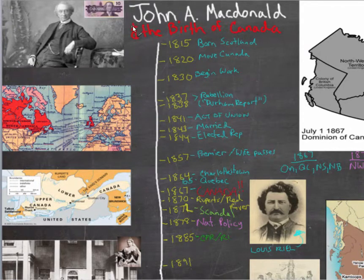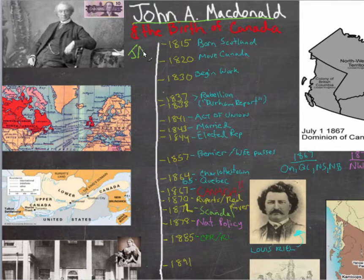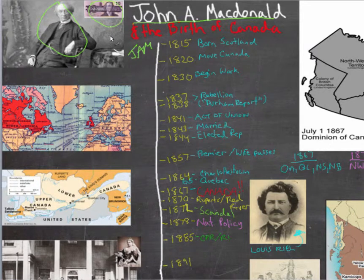Today we're going to be talking about John Alexander MacDonald, a.k.a. John A. MacDonald, a.k.a. Jan, Canada's first Prime Minister. Here he is on the left, and here he is on the Canadian $10 bill. Alexander Hamilton would definitely approve.